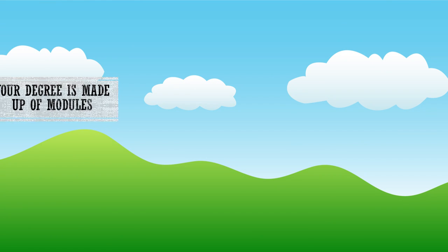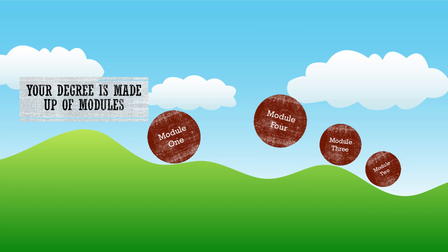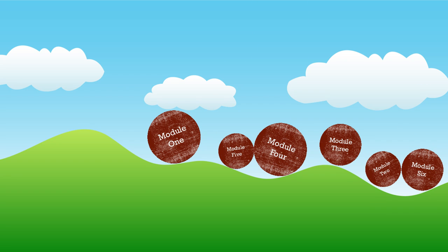Your degree is made up of modules. You'll choose these modules each year over your three or four years to suit your tastes. And each year you'll take 120 credits of modules.